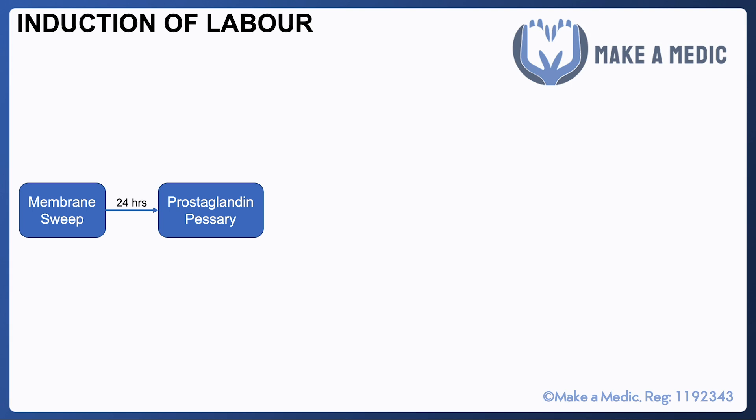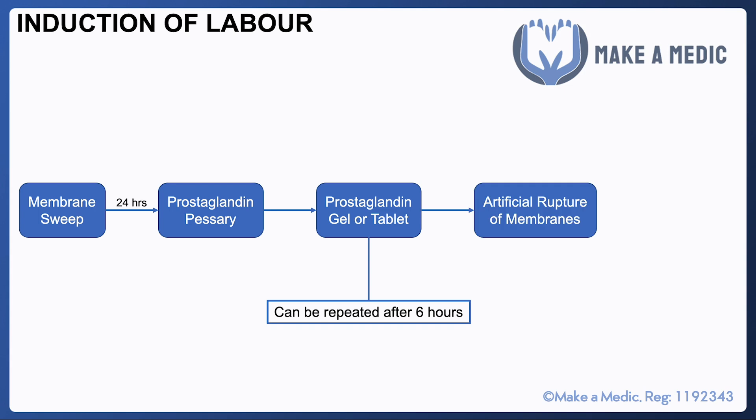If that is also ineffective, then a prostaglandin gel or tablet can be inserted into the vagina, and this can also be repeated after about six hours.